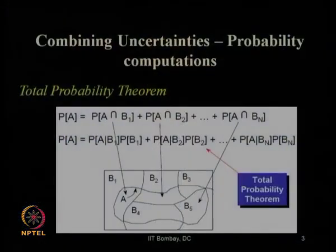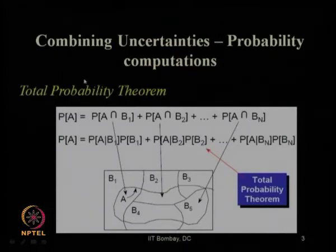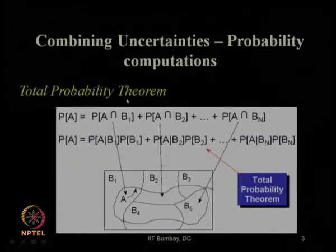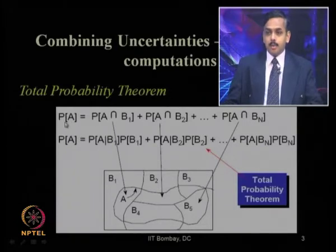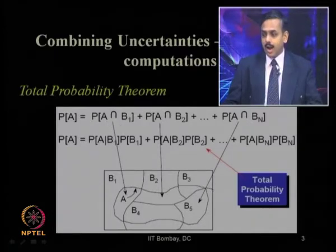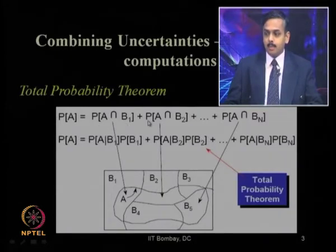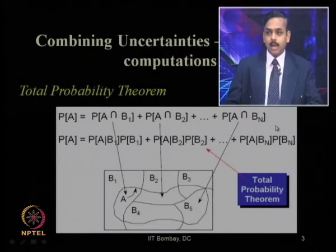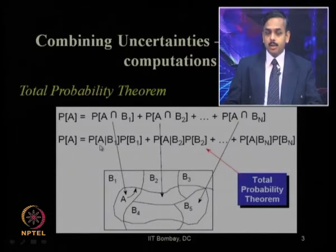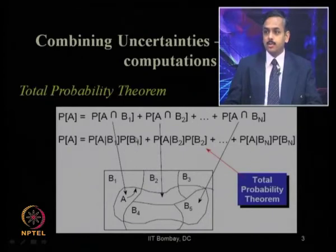If we see this slide, that is how to combine the various uncertainties involved in the estimation of probabilistic seismic hazard analysis or PSHA. From the total probability theorem, we can say that probability of occurrence of any event P(A) can be expressed as P(A intersection B1) plus P(A intersection B2) and so on up to Bn, which we can rewrite as P(A|B1) multiplied with P(B1), and similarly for B2, and so on.